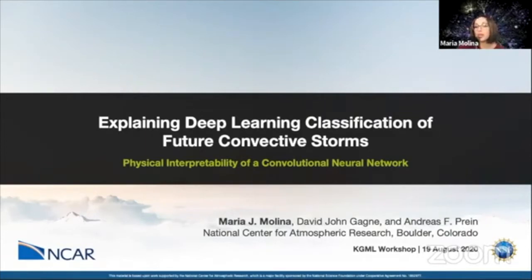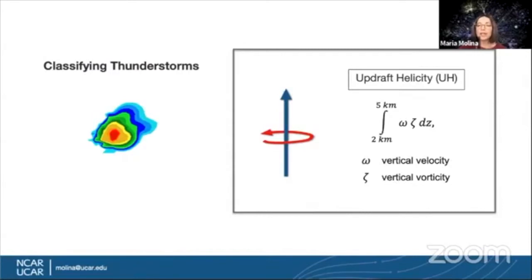Today I'll be sharing some of my postdoctoral research, which has focused on training a convolutional neural network to perform a classification task of thunderstorms. We care about classifying thunderstorms because there is a subset of convection that has a greater likelihood to produce severe hazards, which in our case include tornadoes and large hail.